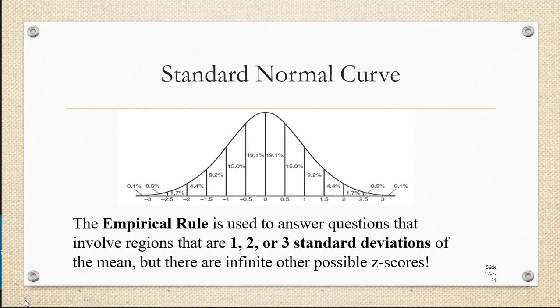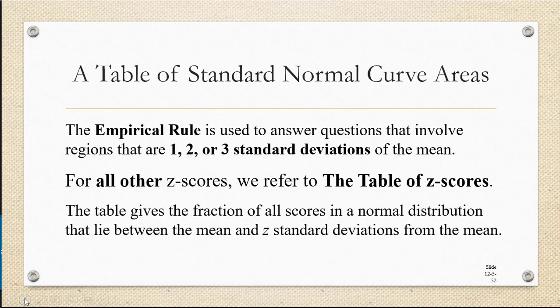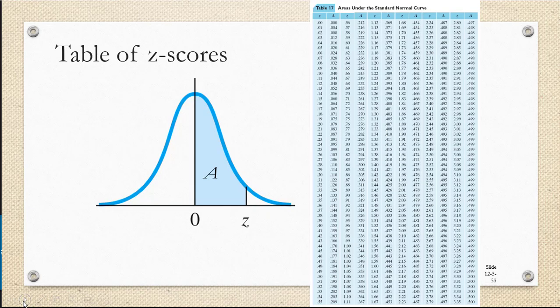We could have half, or we could have three quarters, or 1.62. Anything is possible. So for all other z-scores, we're going to refer to the table of z-scores. The table of z-scores gives the fraction of all scores in a normal distribution that lie between the mean and z standard deviations from the mean.